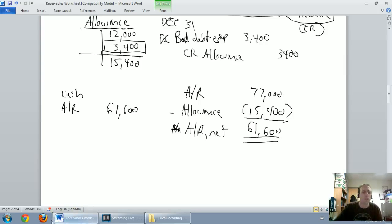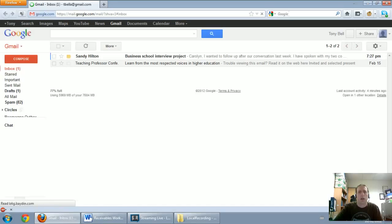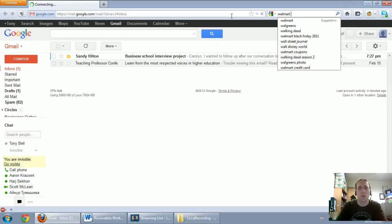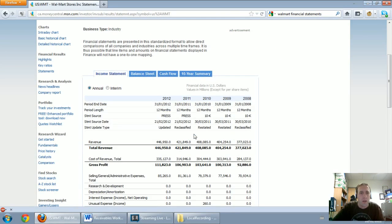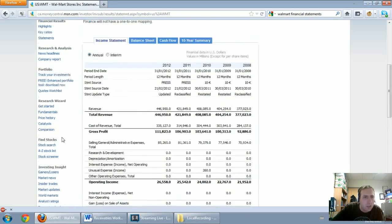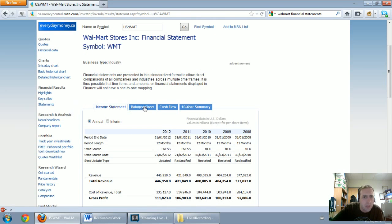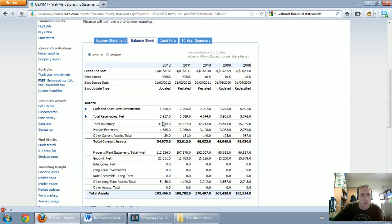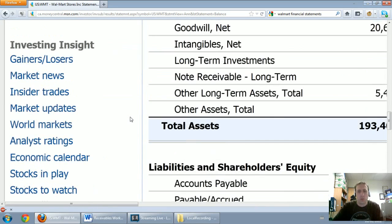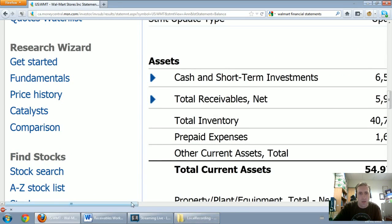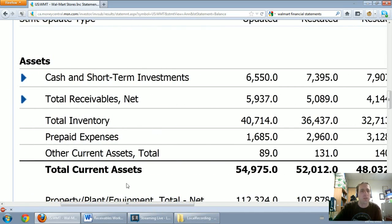But on the face of the balance sheet, if we Google our favorite company, let me Google, I don't even know, let's see, oops, I probably shouldn't open my Gmail in front of everybody. Walmart Financial Statements. If I Google them, let's find their balance sheet. Balance sheet. Total receivables net.